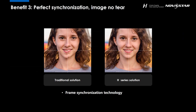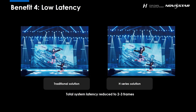Darren, which lady on the screen do you want to go with — the left one? Definitely the right one. The image on the left is being torn, and this is caused by the synchronization issue between different outputs of the splicer and the sending controller. So can H series fix this? No doubt about it. After using H9, the beautiful lady doesn't need to worry that her face may be torn into pieces on the display. And benefit 4: Low Latency. You can see how important a low latency system is for performances. The H series solution outperforms traditional ones by two to three frames, giving customers a better user experience.